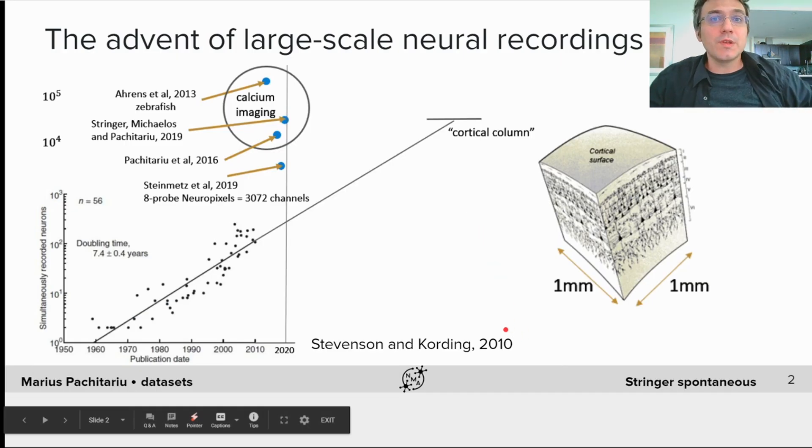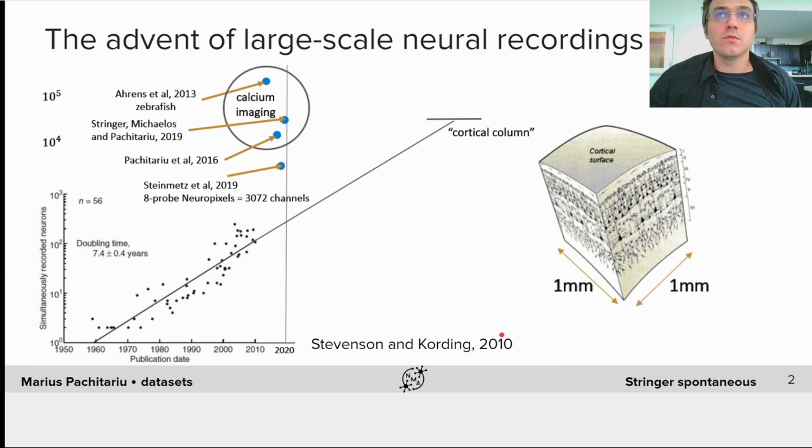These datasets are part of a recent trend in neuroscience to increase the number of neurons we can record simultaneously. As you can see, this trend wildly exceeds even the most optimistic expectations of Conrad and Jan Stevenson from 2010. Many labs can now record neural activity from almost an entire cortical column, which is defined as approximately a 1 by 1 by 1 millimeter chunk of brain.